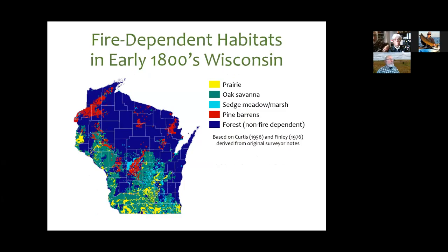If we were to turn back the clock to what Wisconsin looked like before European settlement in the early 1800s, the southwestern half of the state was a mosaic checkerboard of prairie, oak savanna, and fire-dependent wetland areas. A little further north, and in central Wisconsin, you also have not just oak savannas but pine barrens — really dry areas, more like a pine savanna. All four of those systems are very dependent on frequent burning to be maintained.